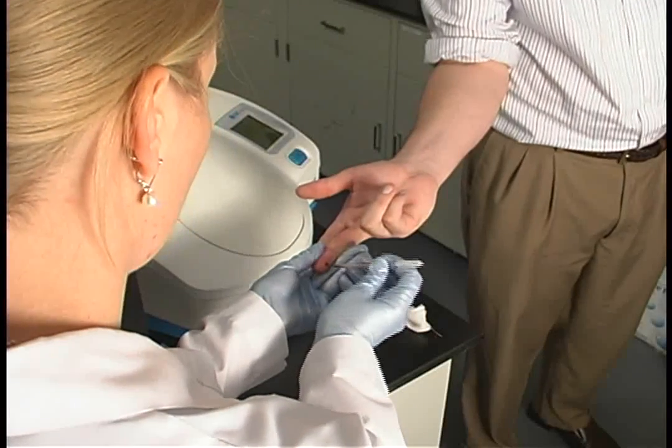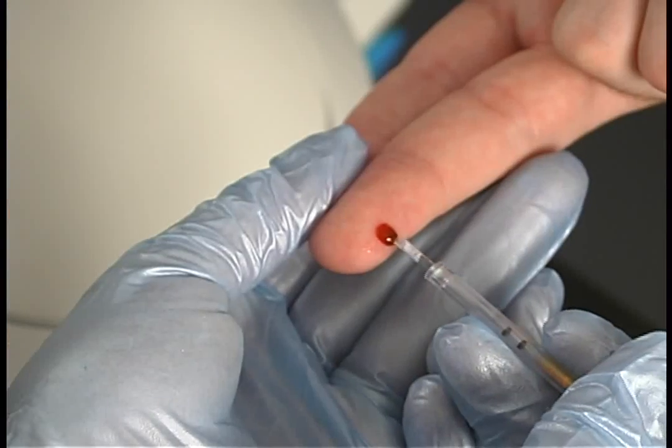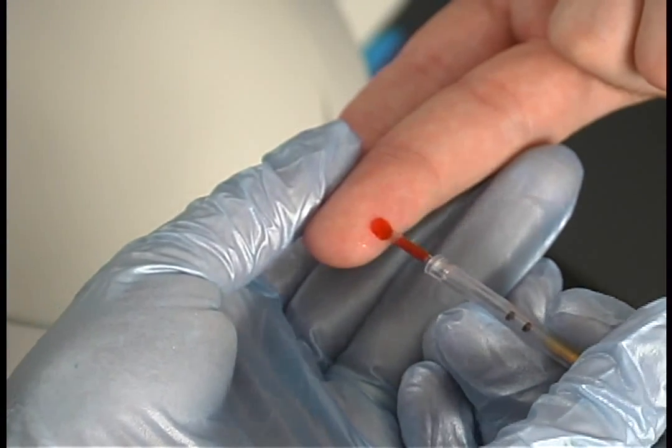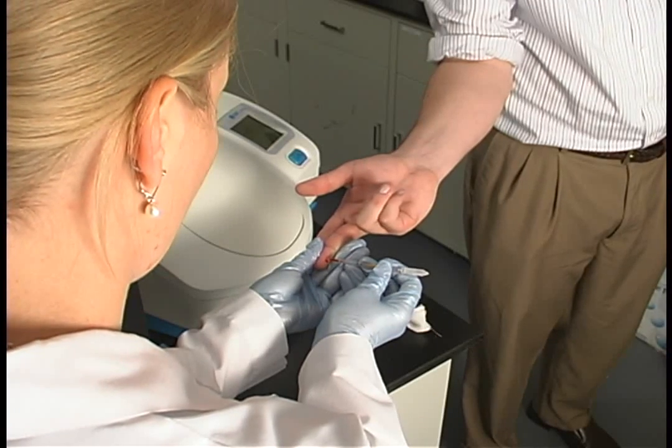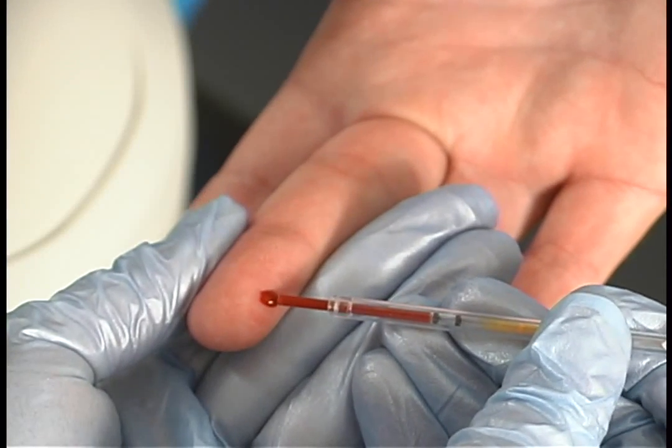Holding the star tube in a horizontal position, gently touch the inner tube to the drop of blood. Be careful not to touch the fingertip with the tube, as this could introduce skin cells into the sample.